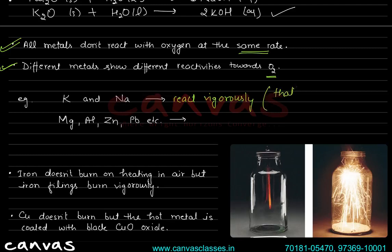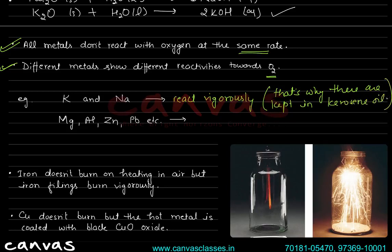Potassium and sodium react so vigorously that they are never kept in open air. That is why they are kept in kerosene oil so that they have no contact with air. Metals like magnesium, aluminum, zinc, and lead do react with air, but no vigorous reaction occurs.